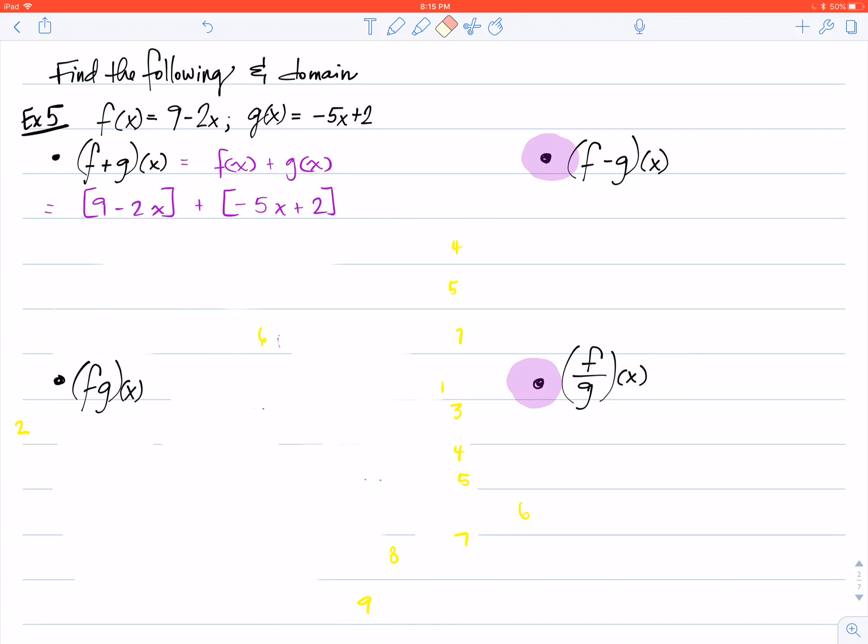This time, however, there's nothing I can do inside of the groups because my 9 and my 2x are not like terms, my 5x and 2 are not like terms. So there's nothing I can do within the group. I can go ahead then and simply combine like terms between the two groups.